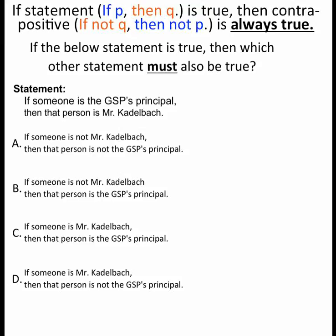That's the contrapositive. So my statement is: if someone is GSP's principal — if P — then that person is Mr. Kattelbach — then Q.